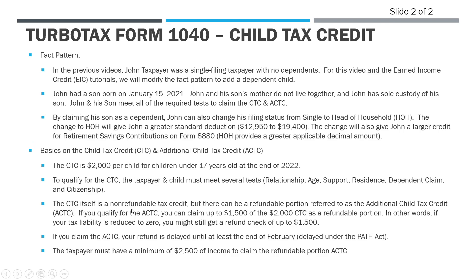The child tax credit is a non-refundable credit. That means that when you claim this $2,000, it is a dollar-for-dollar reduction in your tax. If your tax is reduced to zero, you do not get a refund for the excess unless you qualify for the additional child tax credit. The ACTC is basically the refundable portion of the child tax credit — you can claim up to $1,500 of the $2,000 amount as a refundable portion. In this example, John meets this criteria, so his tax is reduced to almost zero and then he gets a refund from the IRS for the ACTC piece.